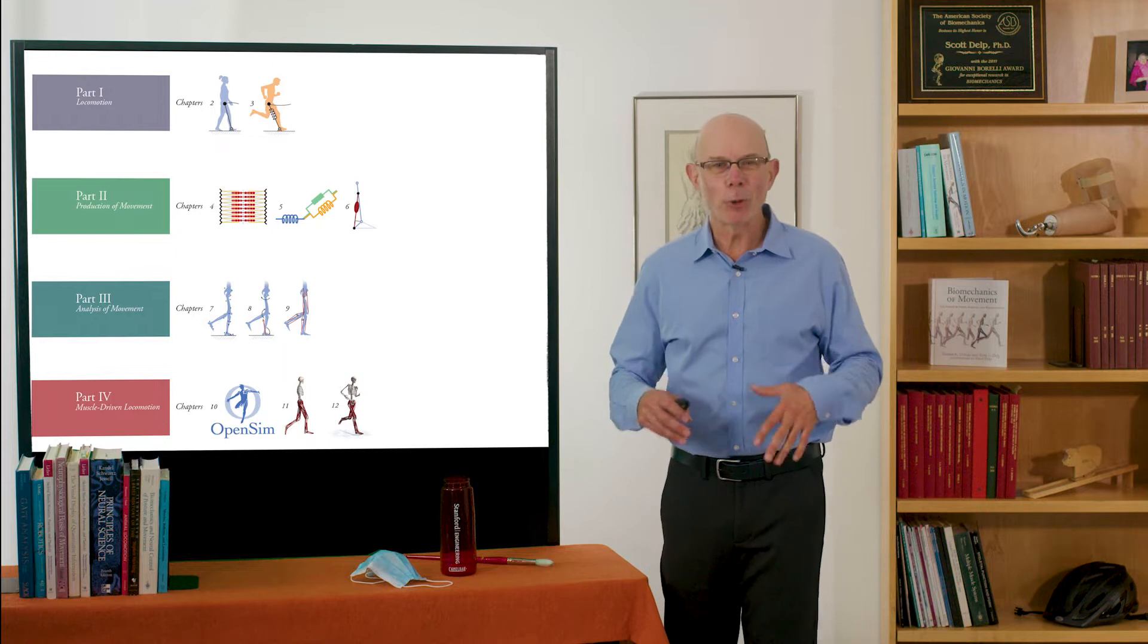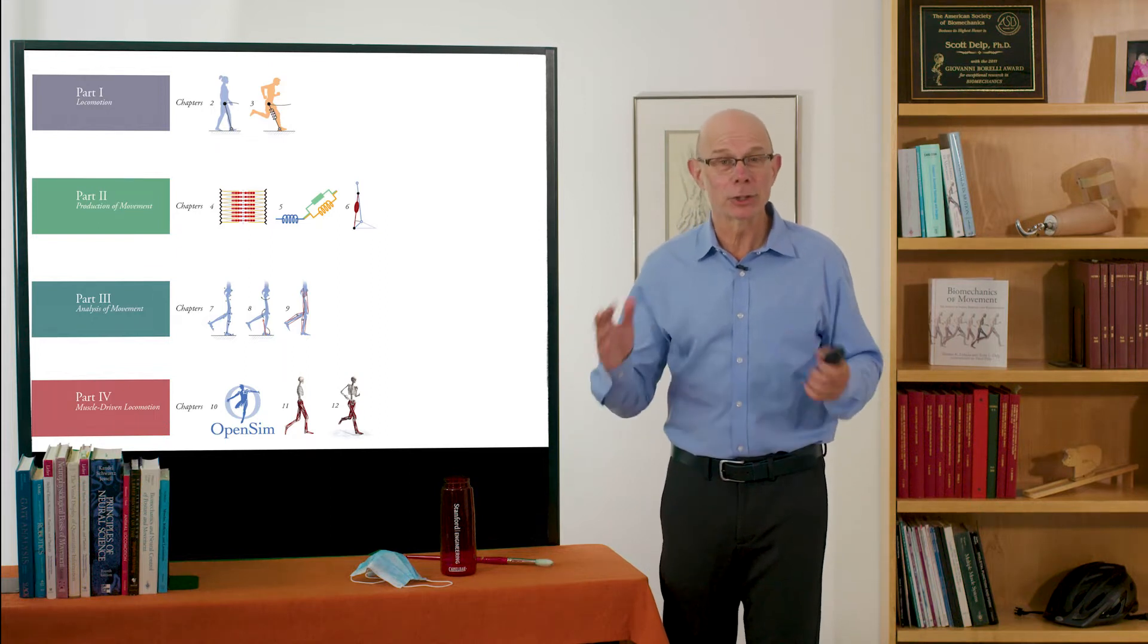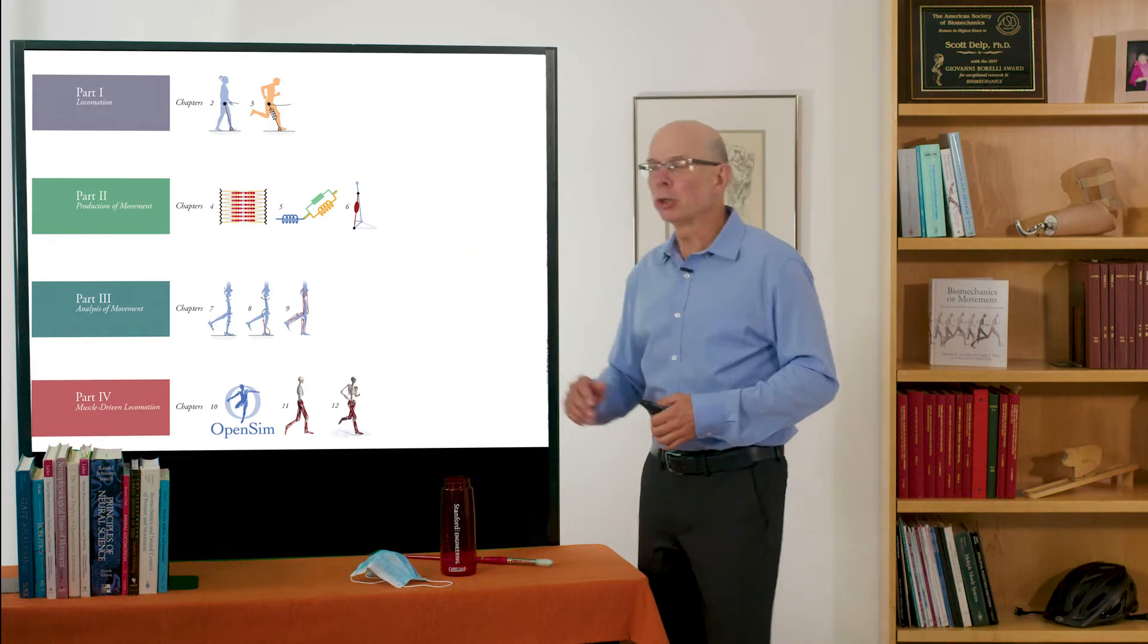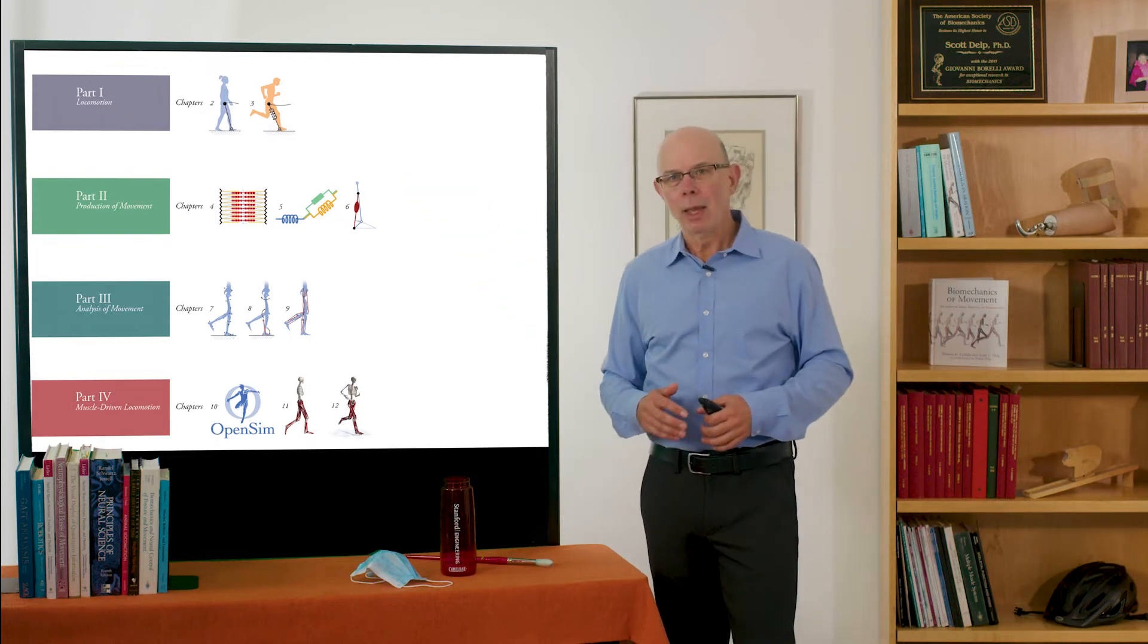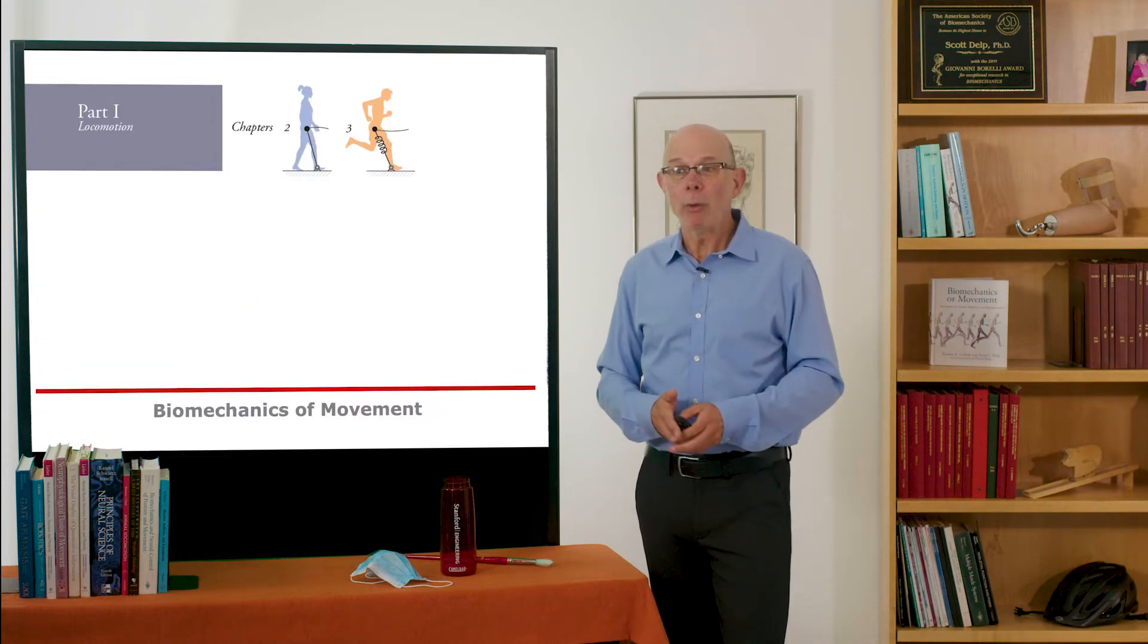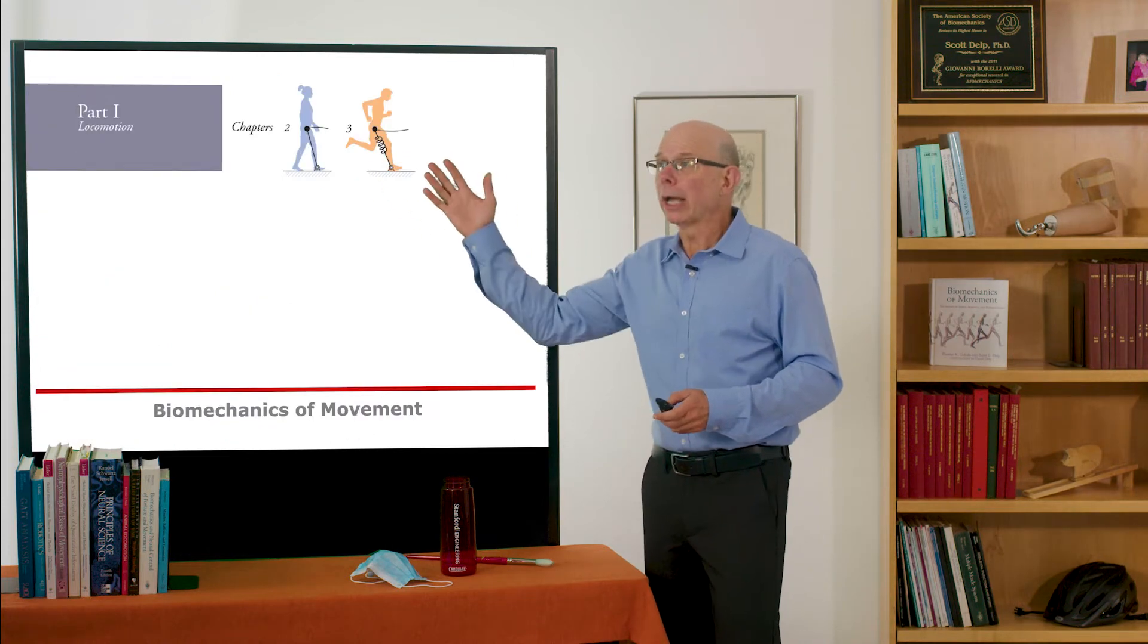We've finished with part one of the book and you can see the organization of the whole book here. So we've talked about locomotion, walking and running, and we missed an important part of locomotion that is how we go about creating walking and running.